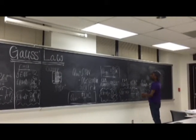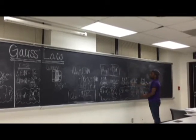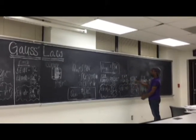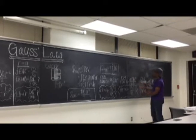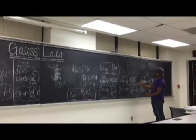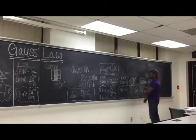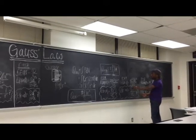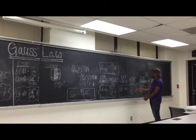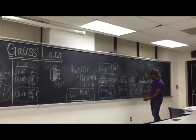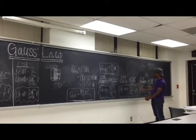When R is greater than A, the electric field times the area equals 2 pi R rho-naught L times A to the 4th divided by 4 epsilon-naught, times 1 over R.